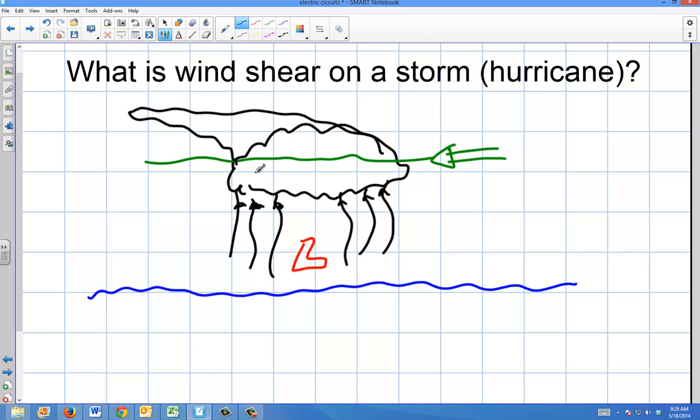So you see the storms get blown sideways like that. If you ever see a storm that the top looks like it's being blown sideways, it's done basically growing. It needs calm conditions to go up.